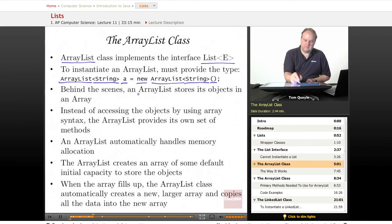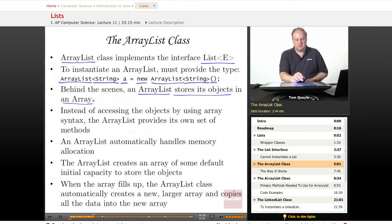Behind the scenes, an ArrayList stores its objects in an array. So what the ArrayList does is it declares an array behind the scenes, and that's where it stores the items that you pass to the ArrayList, that you want to put in your ArrayList.